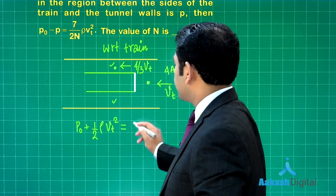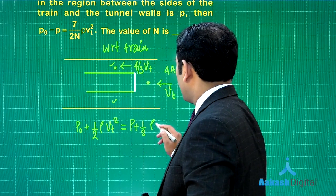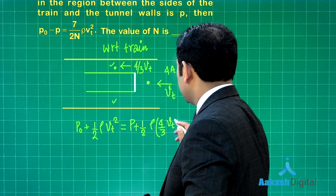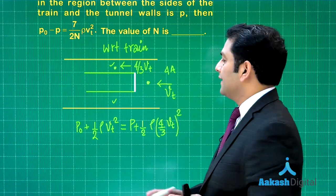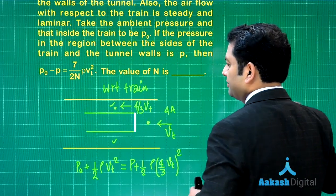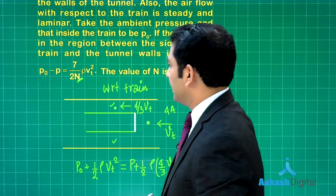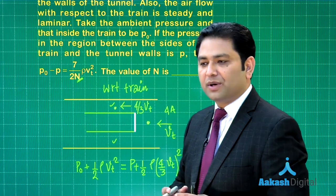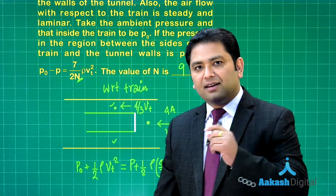This is forming a streamline and we can use Bernoulli's equation between these points. p0 + (1/2)ρvt² equals p + (1/2)ρ(4/3 vt)². You need to find p0 - p, and the value of n will come out to be 9. The expression becomes (7/18)ρvt², so n equals 9.